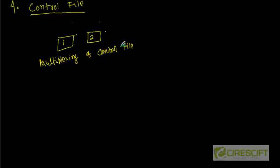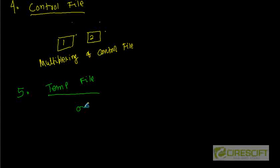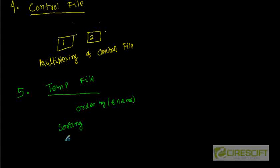The next file type is the temp file. To cater to the temporary requirement of space, we use temp files. For example, when you run a SELECT statement like SELECT * FROM EMP ORDER BY ENAME, the database needs to fetch the employee table's data to a temporary location where it can be sorted. Whenever we perform a sorting operation, we need a temporary place to sort, and once sorting is finished we no longer need that temporary space. That is why we need a temp file.